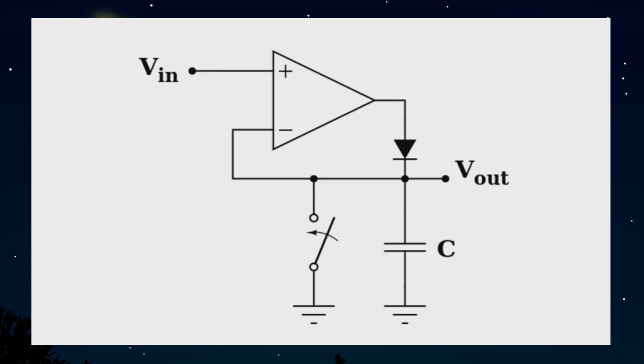So you see, with the variations of the input, your capacitor is getting charged for the positive rising values of the input. And for the falling negative values of the input, the capacitor is maintaining that charge unless and until your input rises again.